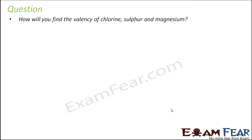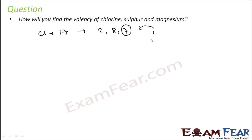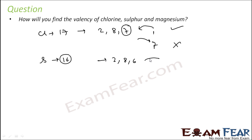Let's take some questions. How will you find the valency of chlorine, sulfur, and magnesium? Chlorine has atomic number 17, electronic configuration 2, 8, 7. It can either take 1 electron or give 7 electrons. Giving 7 is not feasible, so taking 1 is preferable — valency is 1. Sulfur has atomic number 16, configuration 2, 8, 6. Either it takes 2 electrons or gives 6. Giving 6 is not feasible; taking 2 is — so valency is 2.